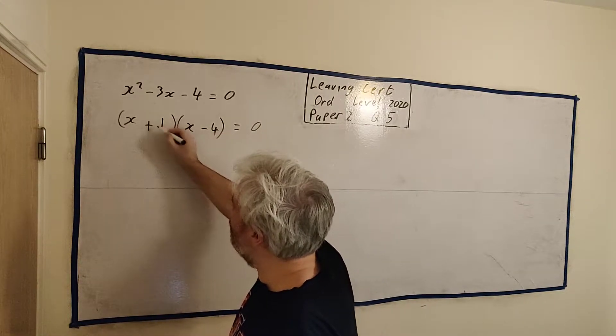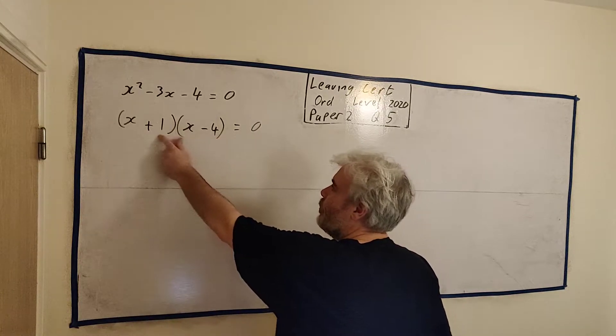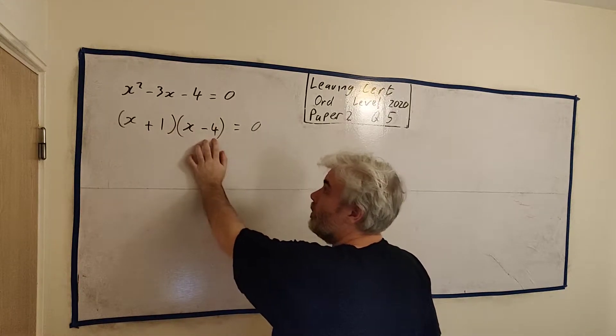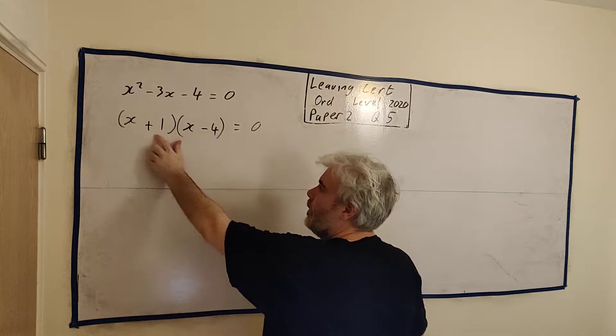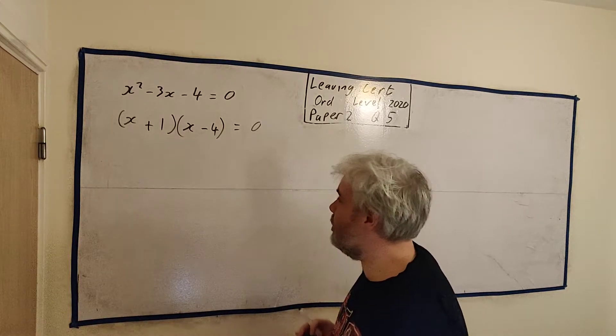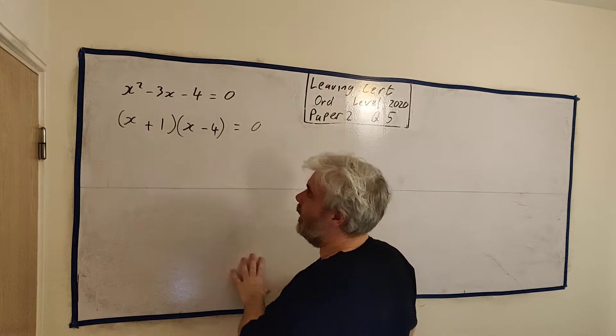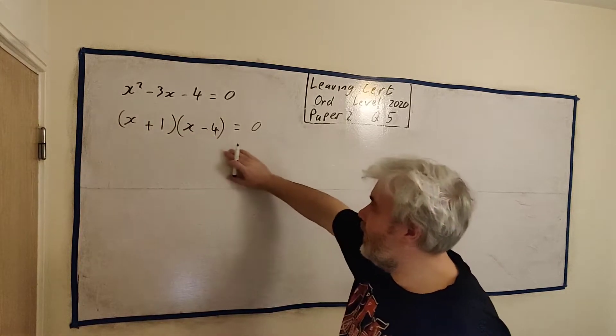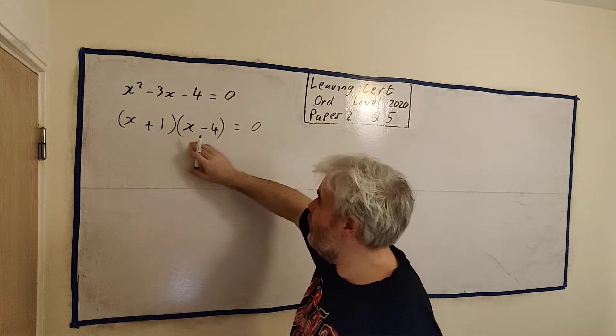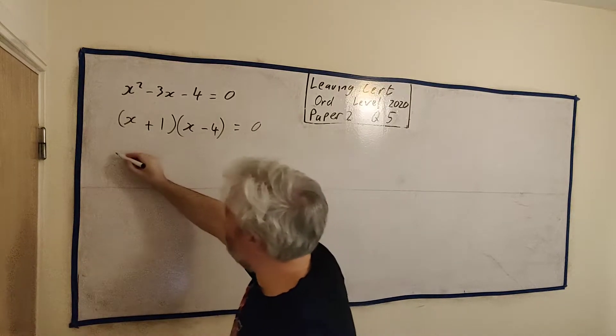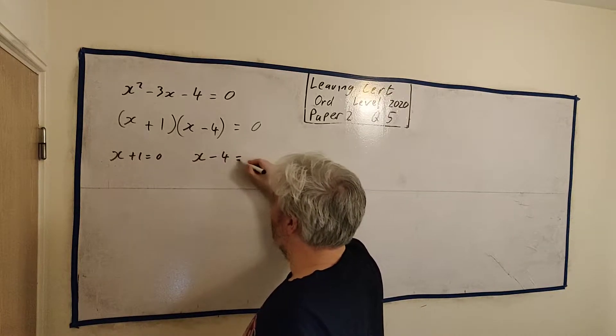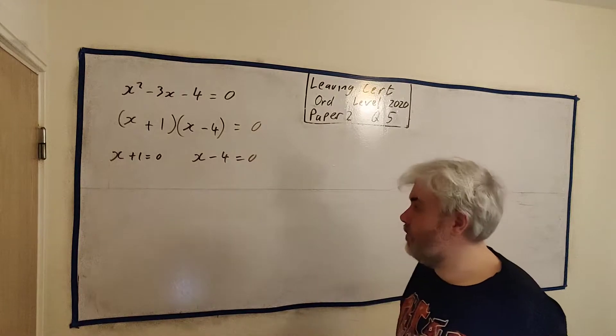Let's make the signs work. A minus 4 and a plus 1 will work for everything. Minus 4 by 1 is minus 4. Then x by minus 4 is minus 4x. 1 by x is plus 1x. So minus 4x plus 1x is minus 3x. And that's it. Once we have it factorized, we have two numbers that multiply to get 0. Well that means this number must be 0 or this number must be 0. That's the only way we can multiply and get 0.